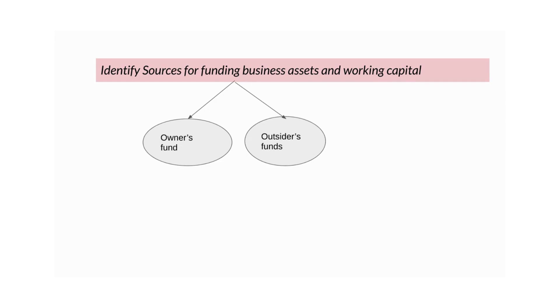One is the owner's fund and the other is the outsider's fund — whether we use money from the owner's pocket or from outside. The main consideration is the cost of funds. The cost of funding the business should be as low as possible, only then will the profit of the business be maximum.